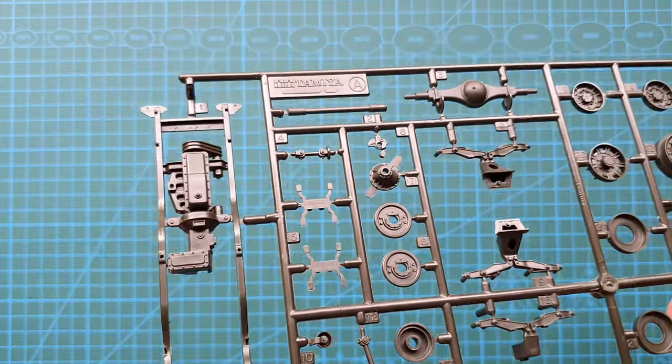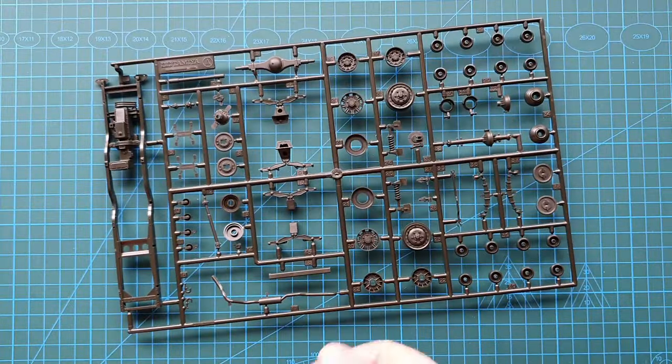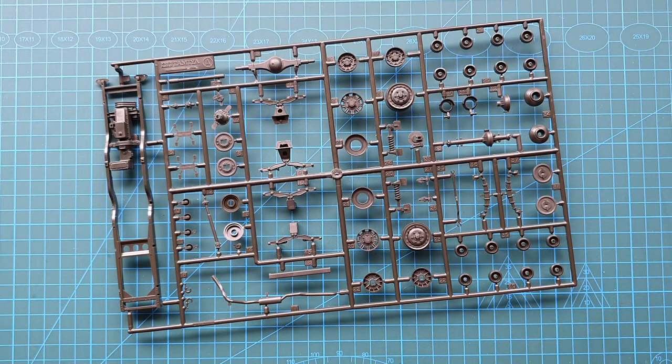Suspension and hubs. And that is your engine with, again, some really nice detail. You won't see that engine unless you turn the vehicle over, but it is nice to know that it's actually there. And that's the last sprue.